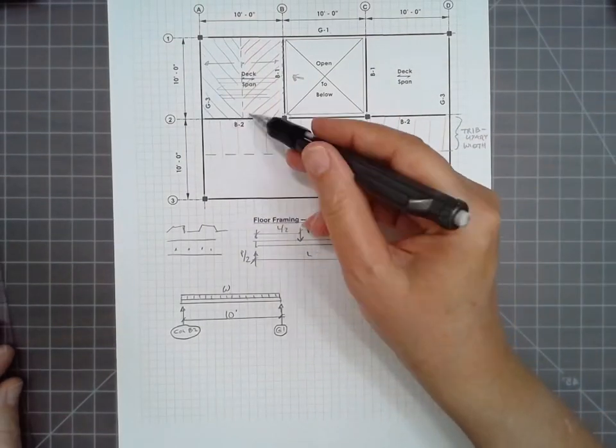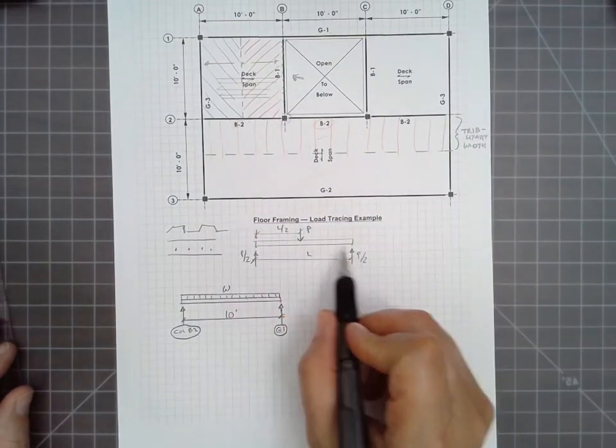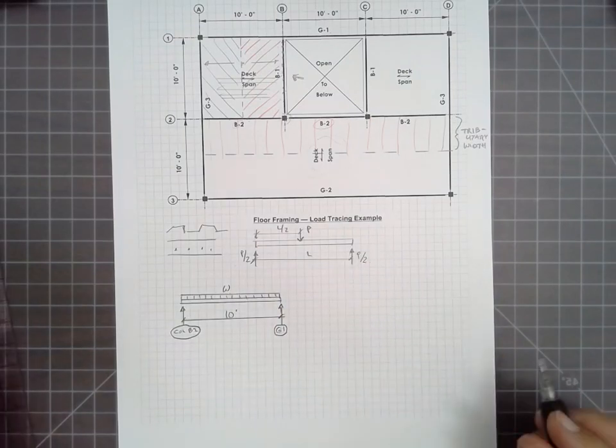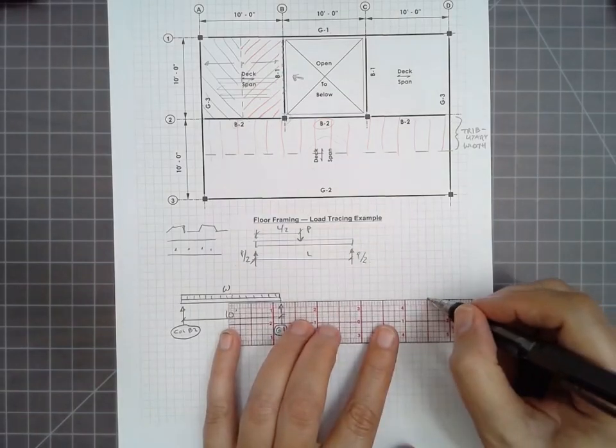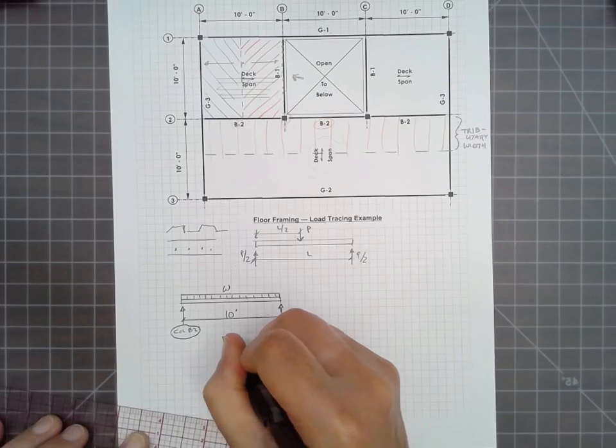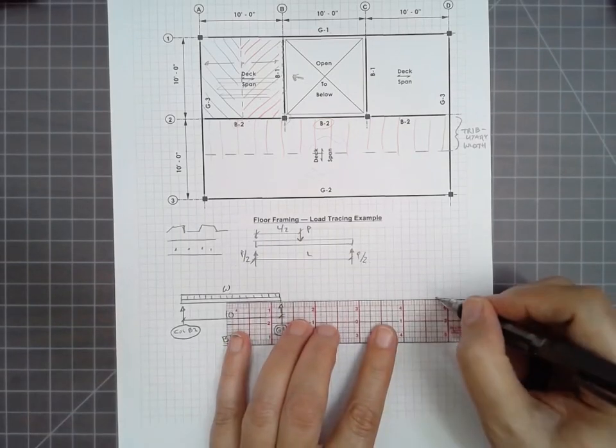It's how much of the deck or the surface is a member responsible for carrying. And typically the tributary width is half of the span, in the same way that a simple beam with a concentrated load at the middle, half of the load goes to one side and half goes to the other. So B2 looks an awful lot like B1.